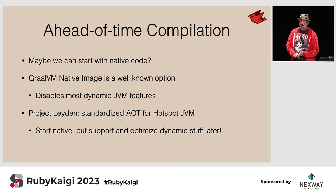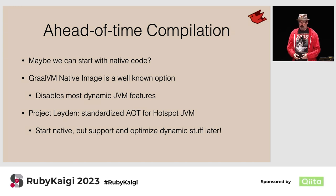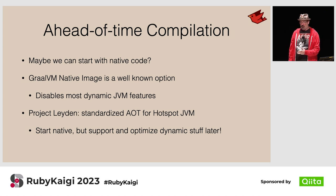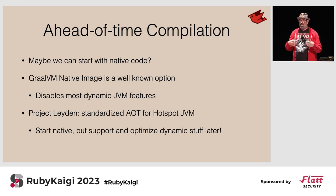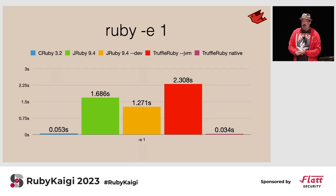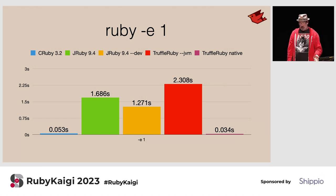We're also looking at ahead-of-time compilation. The GraalVM native image compiler is probably the best known approach — it's what TruffleRuby uses to get startup time down. We're also looking forward to a project called Leyden on the OpenJDK team that will bring a more standardized ahead-of-time compile while still allowing us to run new code and re-optimize. Here's TruffleRuby in JVM mode taking 2.3 seconds, and using their native executable with additional tricks getting it faster than CRuby's startup.